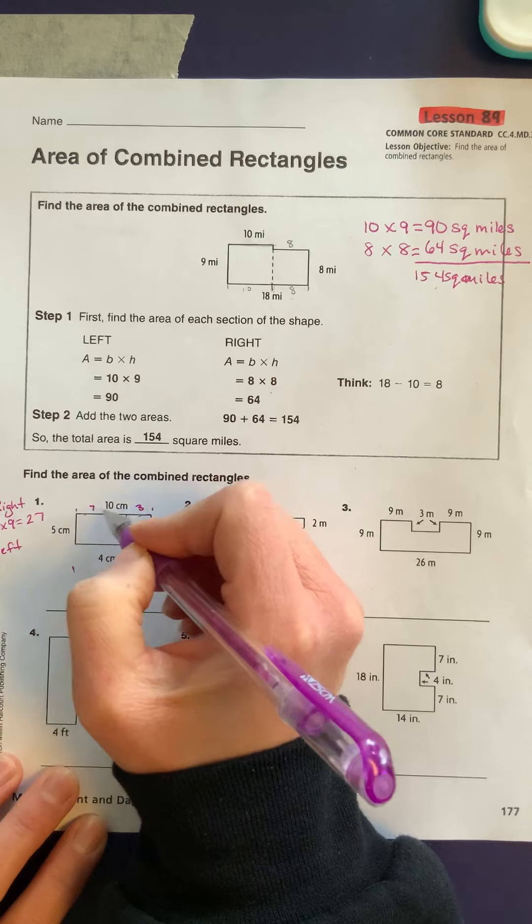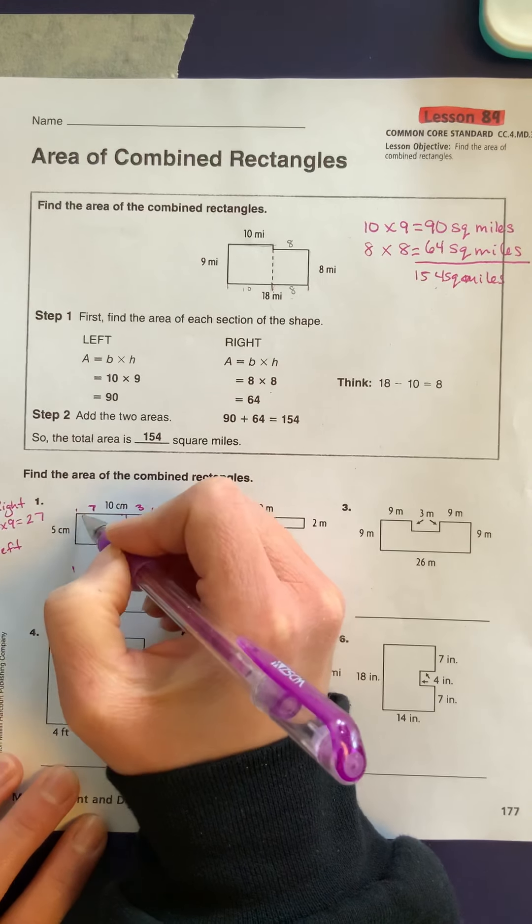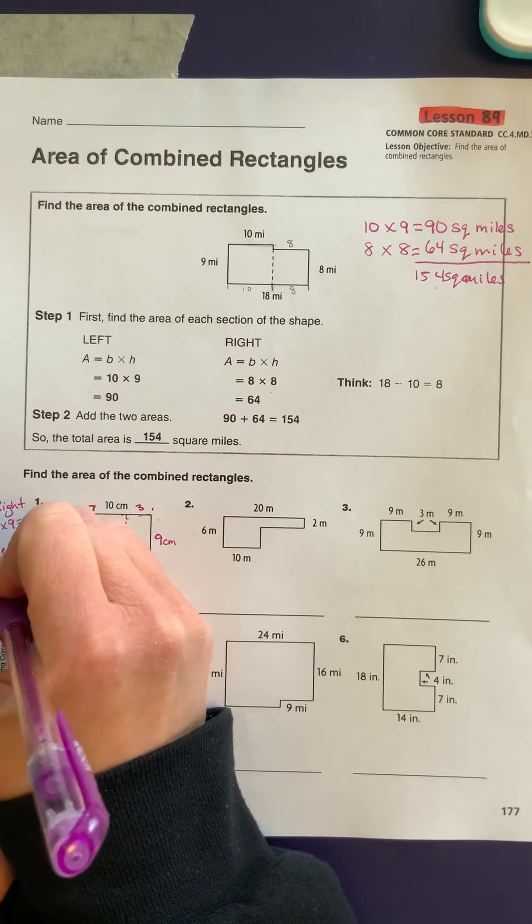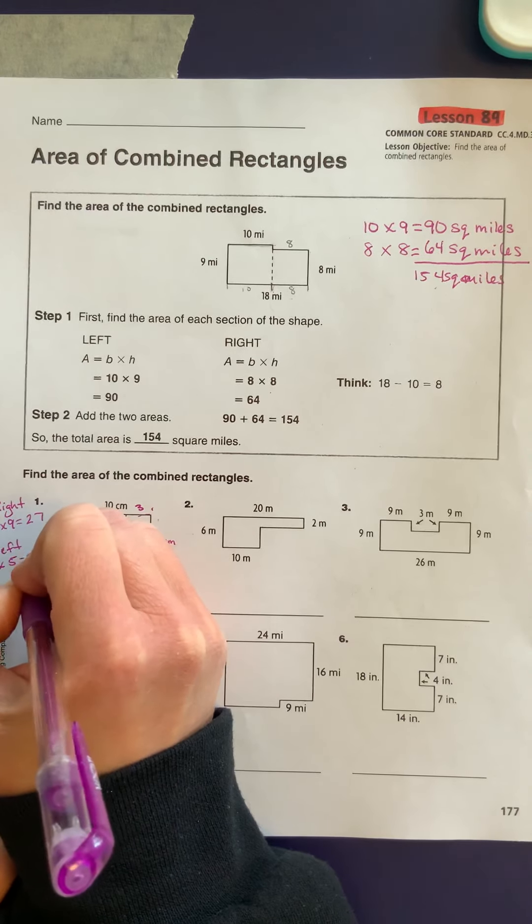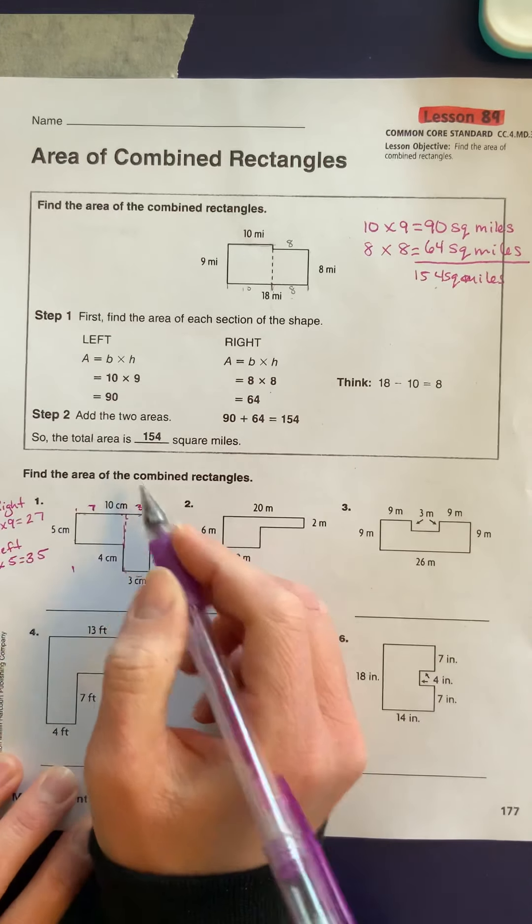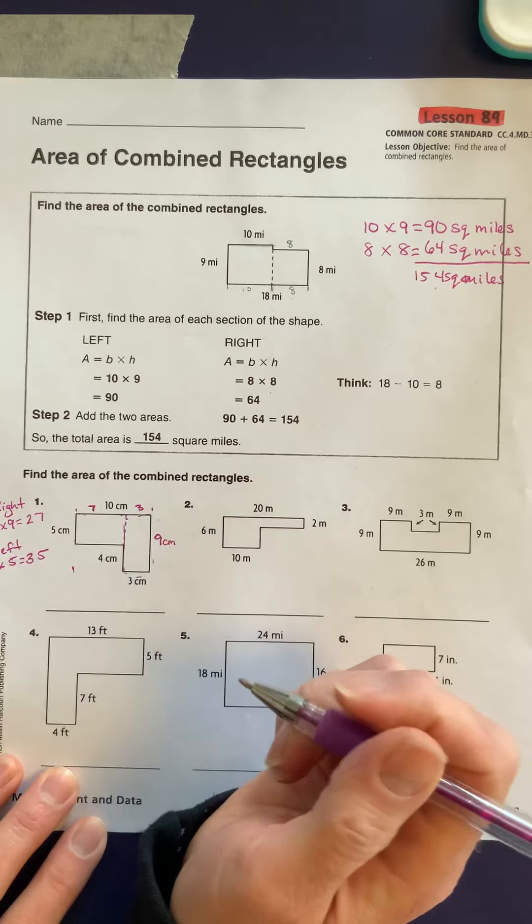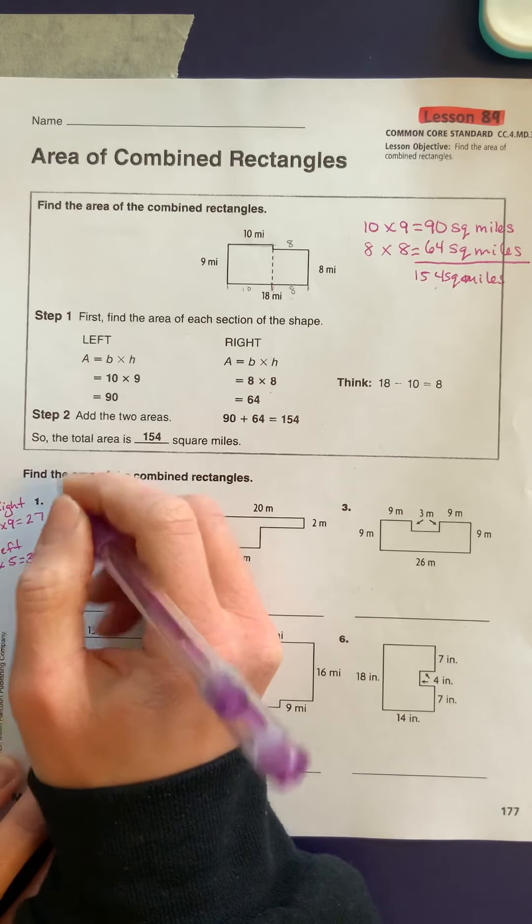Then for the rectangle on the left, we have 7, which is our base here, 7 times 5.